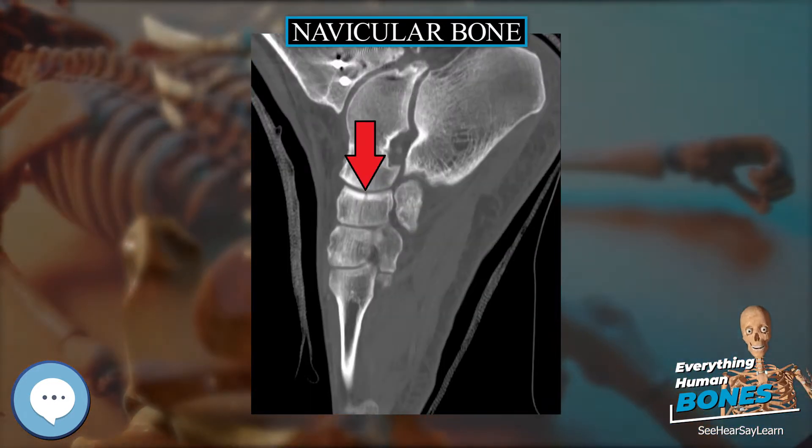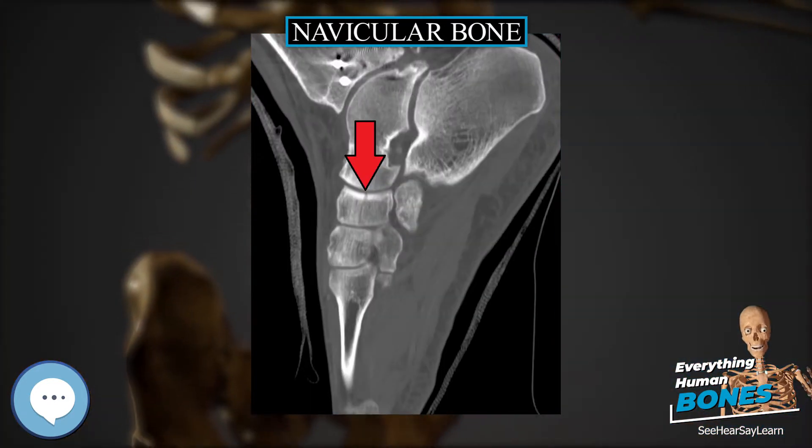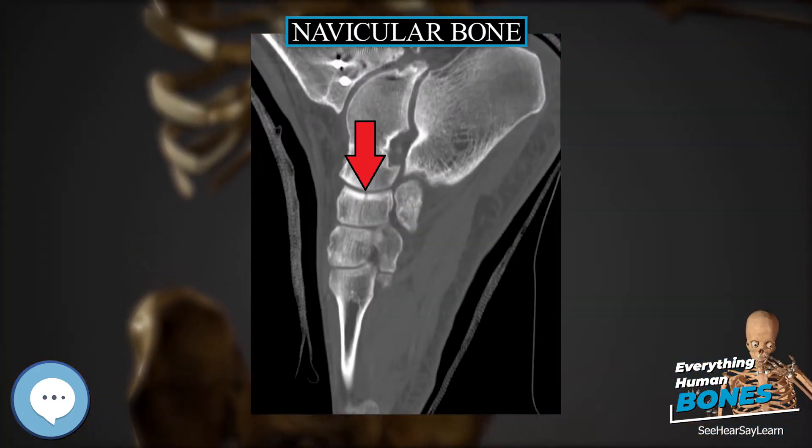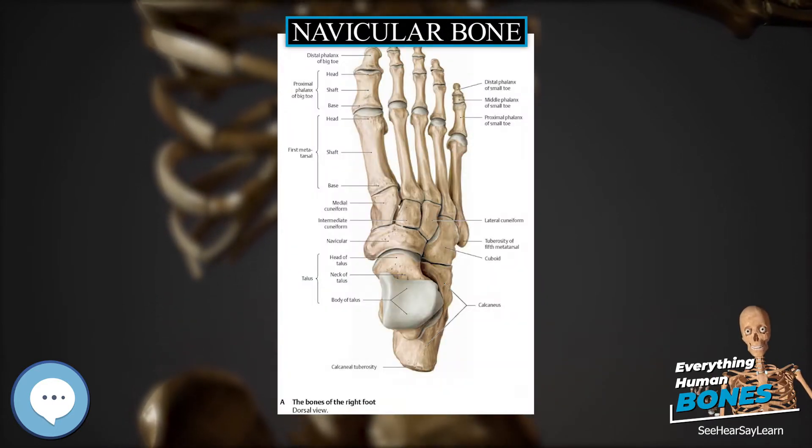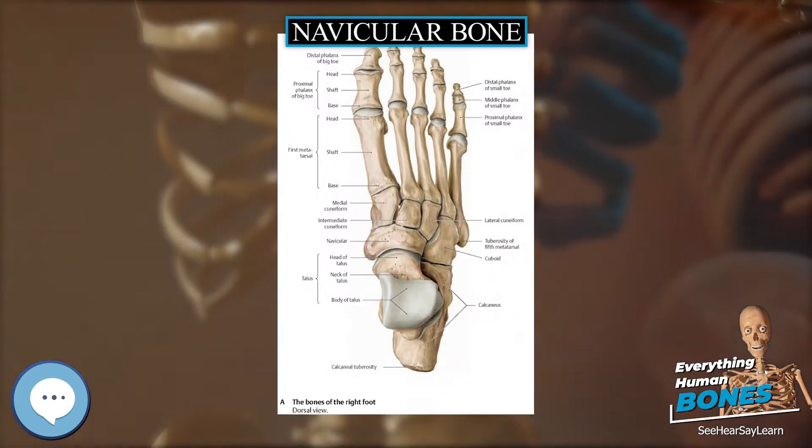The term navicular bone or hand navicular bone was formerly used for the scaphoid bone, one of the carpal bones of the wrist.